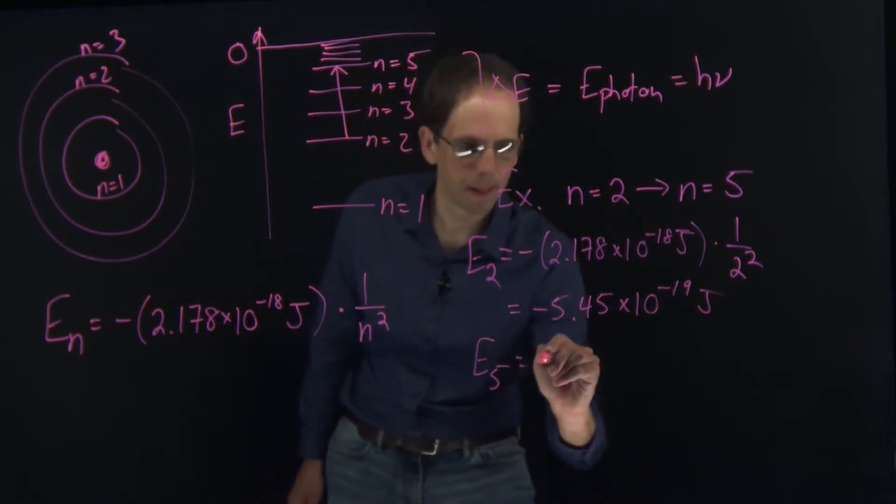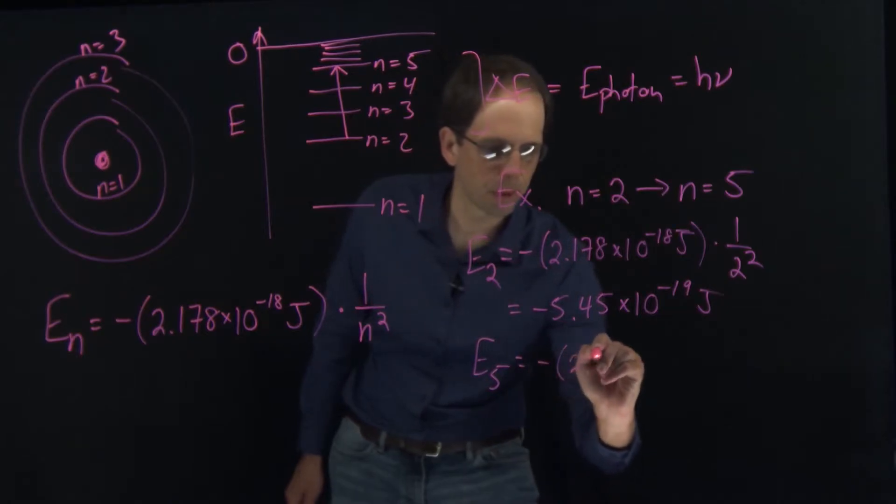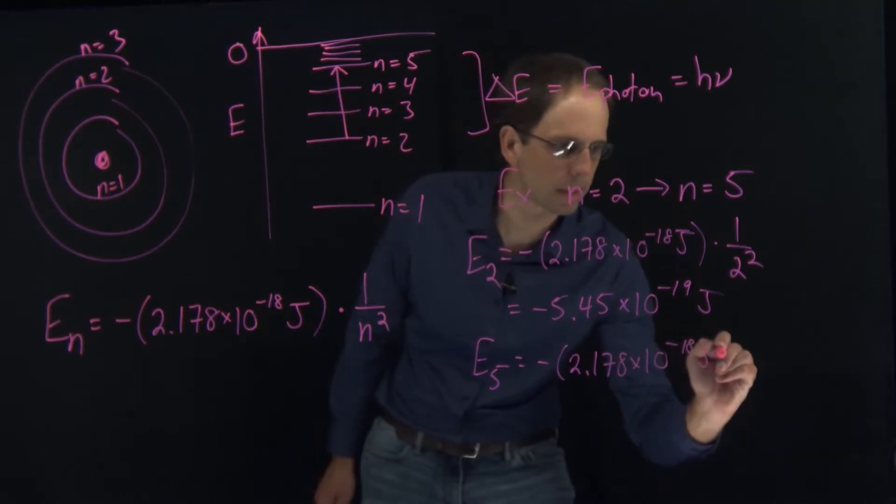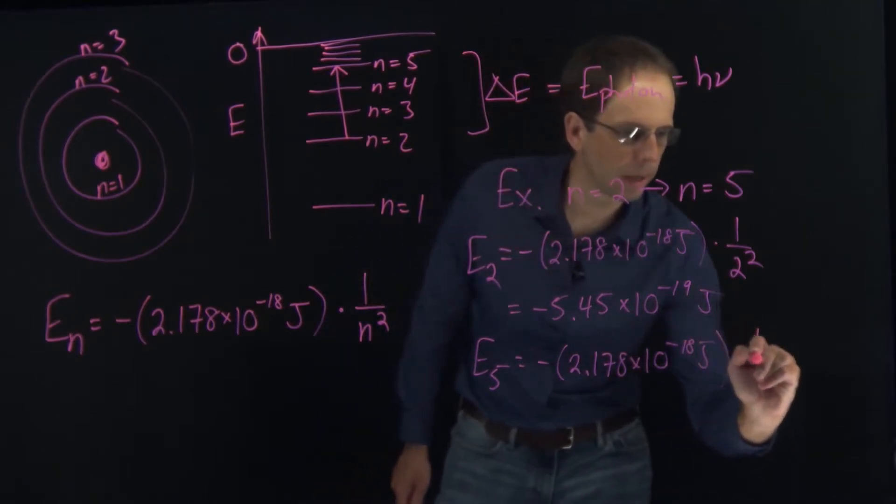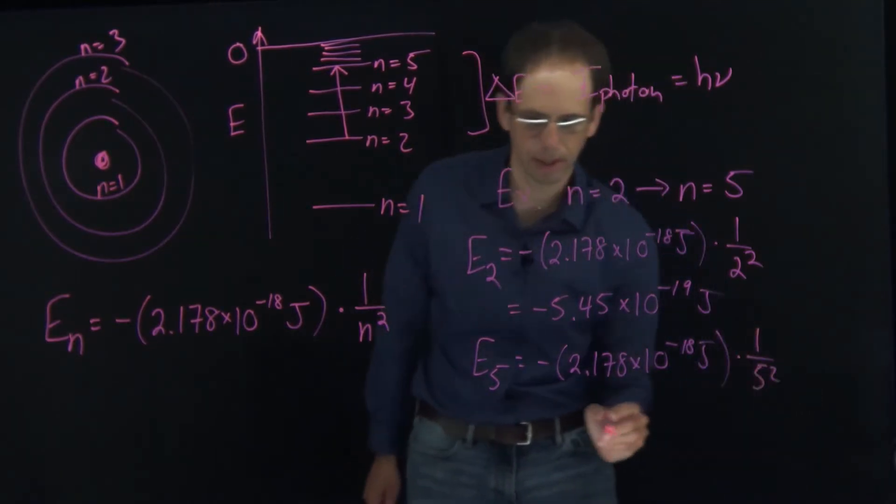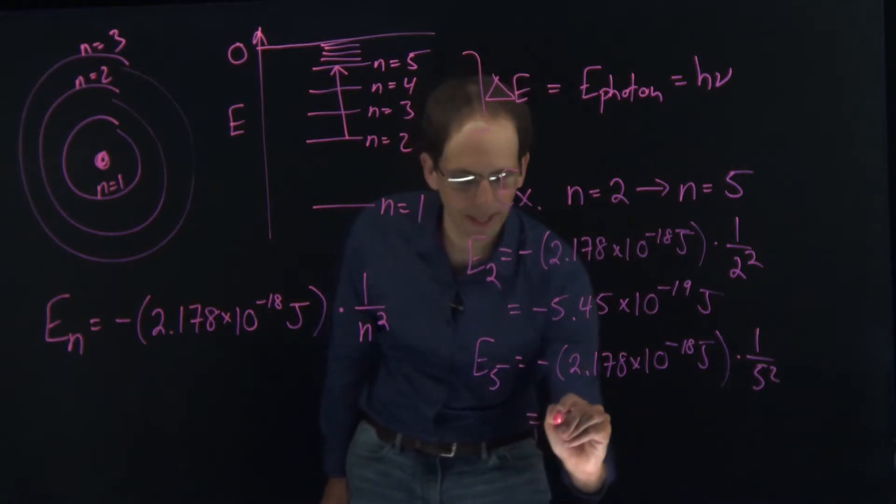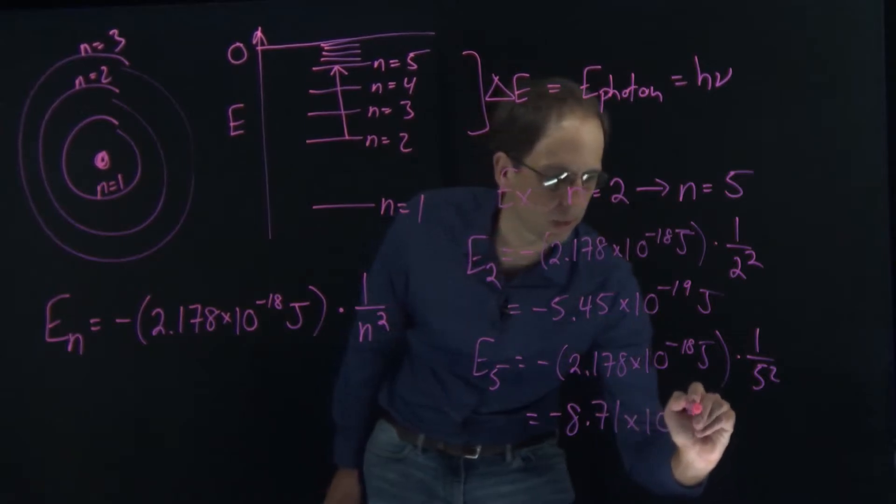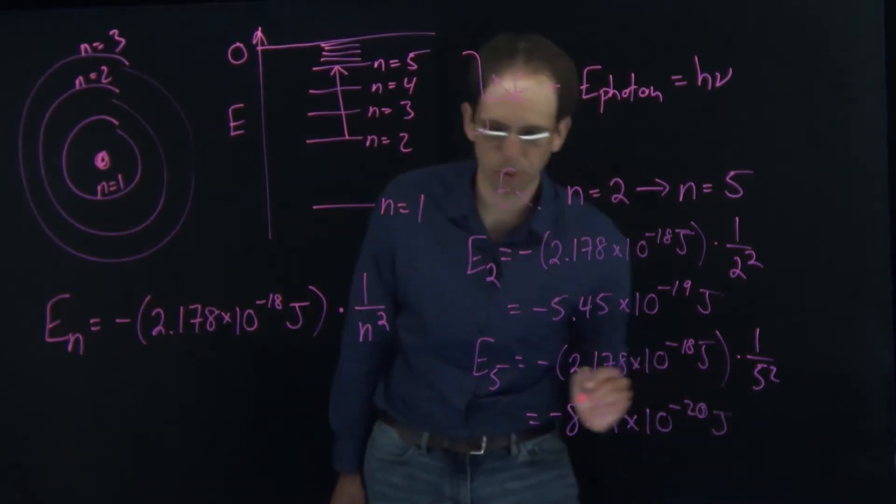If I do the same thing for n equals 5, I get negative 2.178 times 10 to the minus 18 joules times 1 over 5 squared. Plug that in my calculator and I get minus 8.71 times 10 to the minus 20 joules.